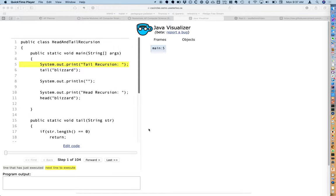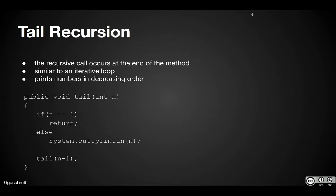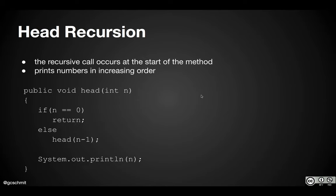To review where we left off on Friday, we defined tail recursion as when the recursive call occurs near the end of the method. It behaves a lot like a normal iterative loop, like a for loop. We had an example of printing numbers in decreasing order. We defined head recursion where the recursive call occurs at the start of the method — this example would print numbers in increasing order.